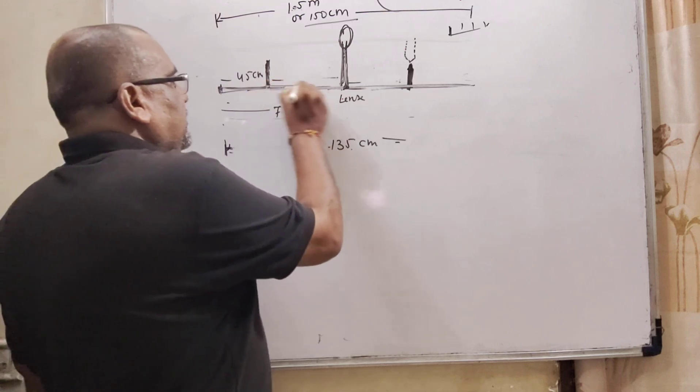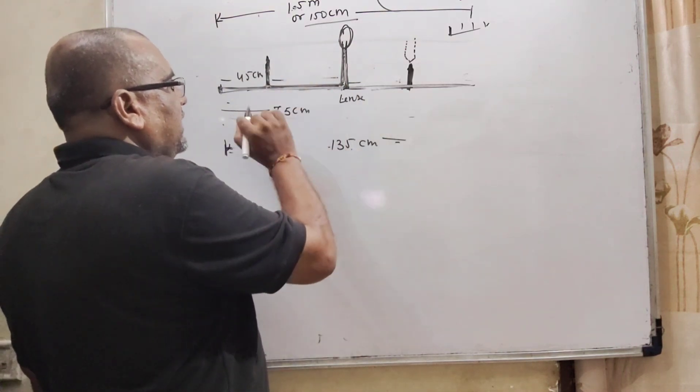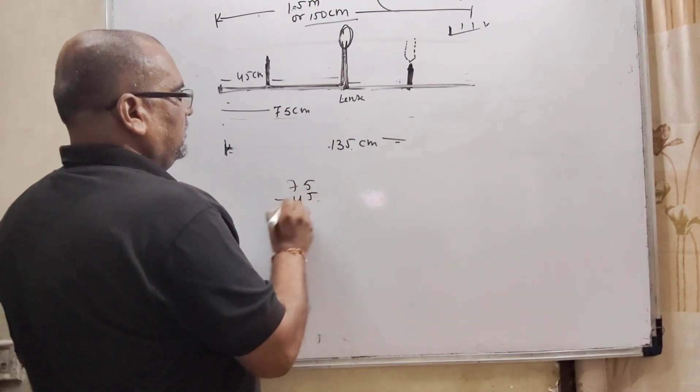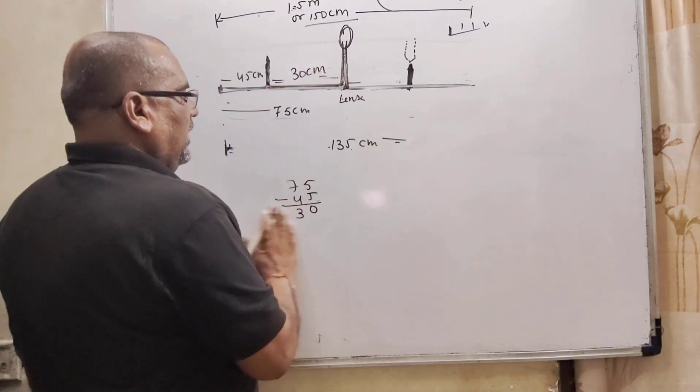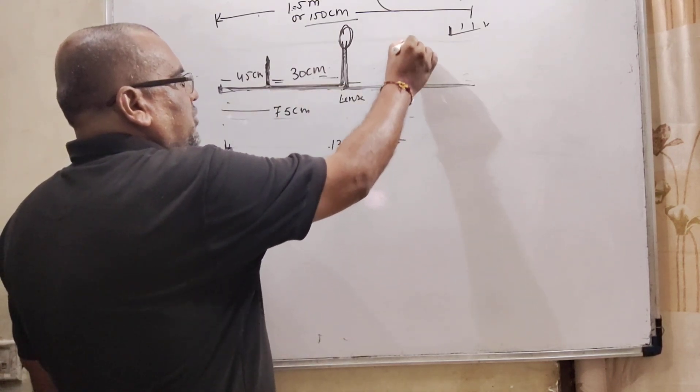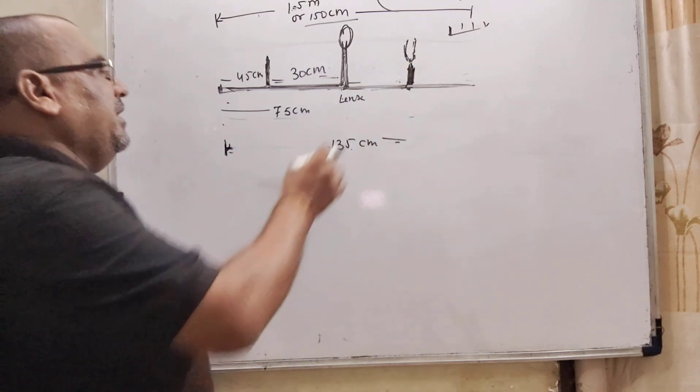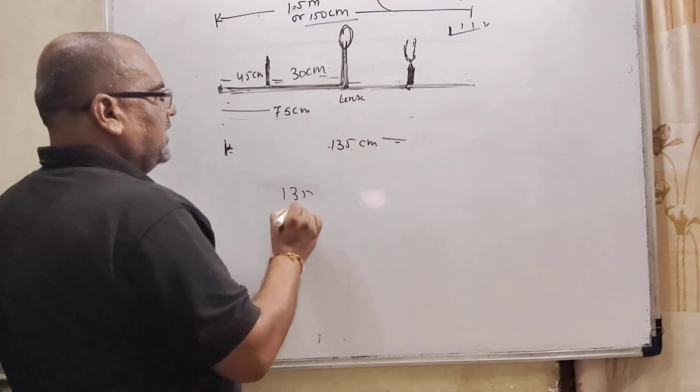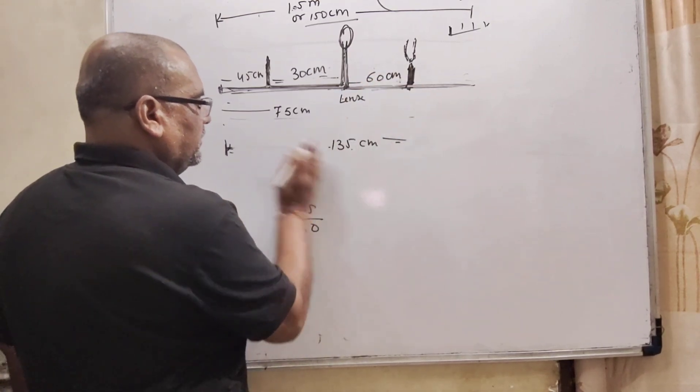So, let us first calculate the distance of this object pin from the lens that is 75 minus 45, so 30 centimeter. And this distance, image pin that is coincides on this pin, so it means here image is formed. It means 135 total distance and the lens distance that is 75, so 60 centimeter away image is formed.